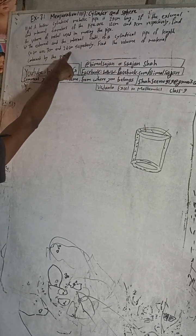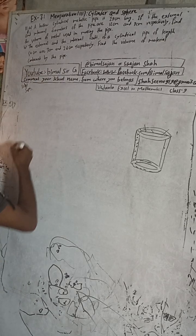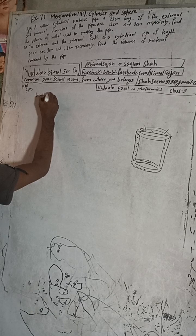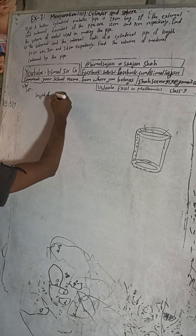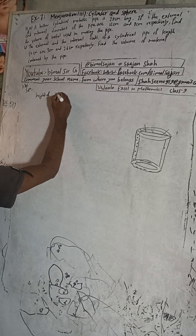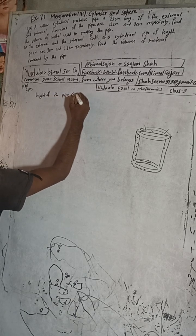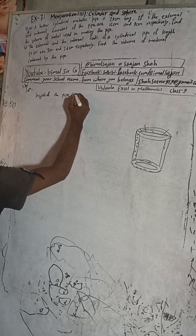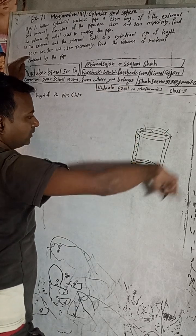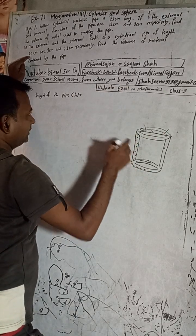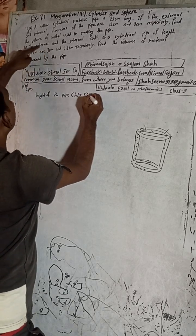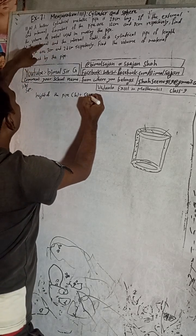Now question 11b: the external and internal radii of a cylindrical pipe of length 50 cm are 3 cm and 2.6 cm respectively. So, given here: height of the cylindrical pipe. The length in the case of a cylinder is the same as height, so height equals 50 cm.